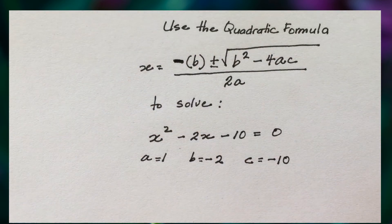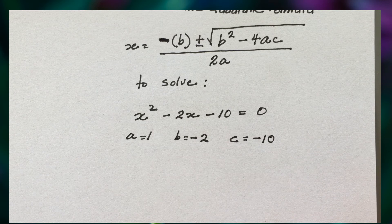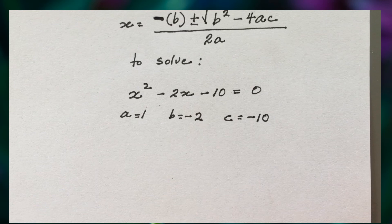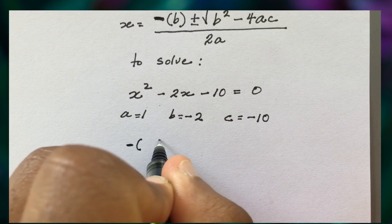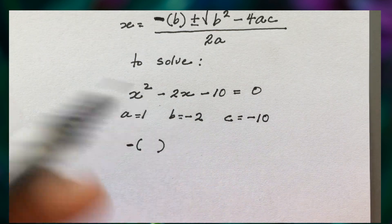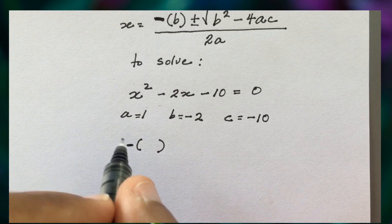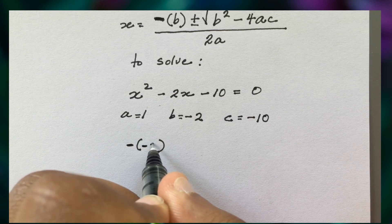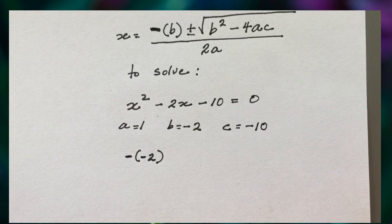We've taken our a, b, and c values and we're going to substitute them into the quadratic formula to find x. Where students normally go wrong is they always leave off the negative — that's why it's in bold. So I'm going to put negative in brackets with the b value, which was negative 2, giving us negative negative 2.